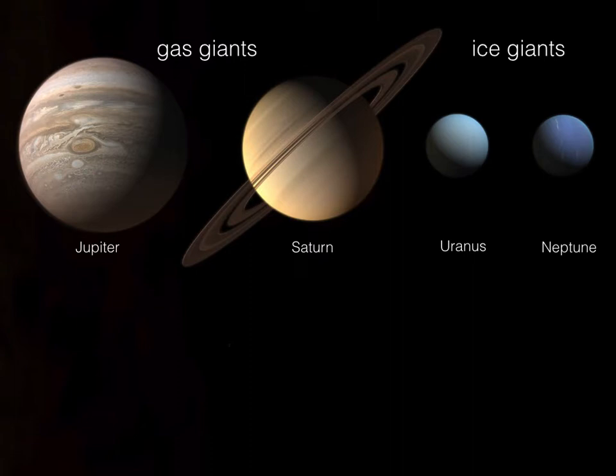Uranus and Neptune look very similar to one another, even in this illustration. Jupiter and Saturn, if you ignore the rings around Saturn — which we'll cover in a future lecture — you'll see that the two planets are largely the same. Both sets of worlds have characteristics that are very similar to one another and very different from each of the other pair. Let me illustrate these characteristics at a high level, and then we'll delve into them in slightly more depth.